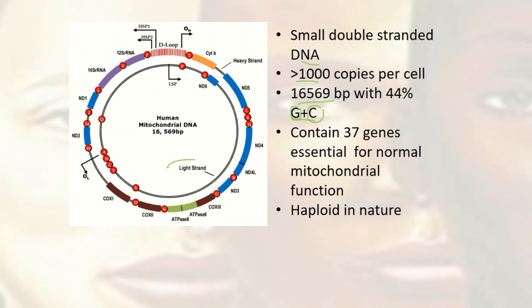The heavy strand is called the H strand and the light strand is called the L strand. It has 37 genes that are essential for mitochondrial function, particularly in the production of ATP. It is haploid in nature because the genes in mitochondrial DNA are single.